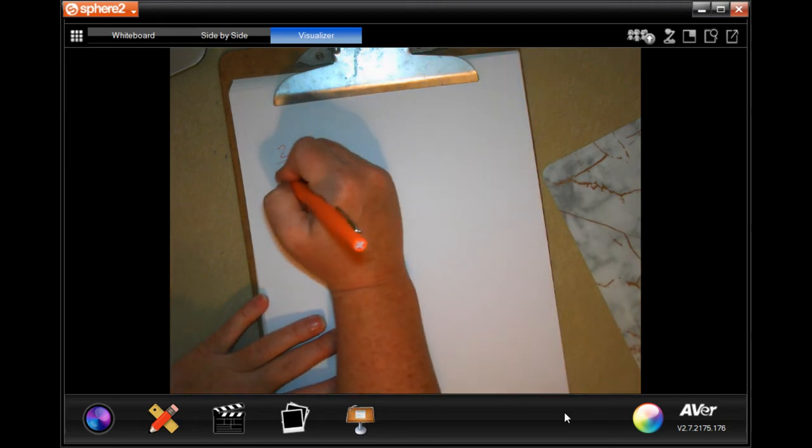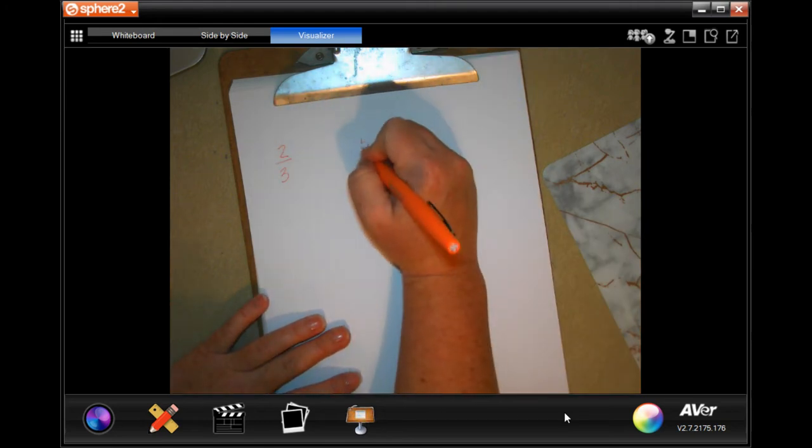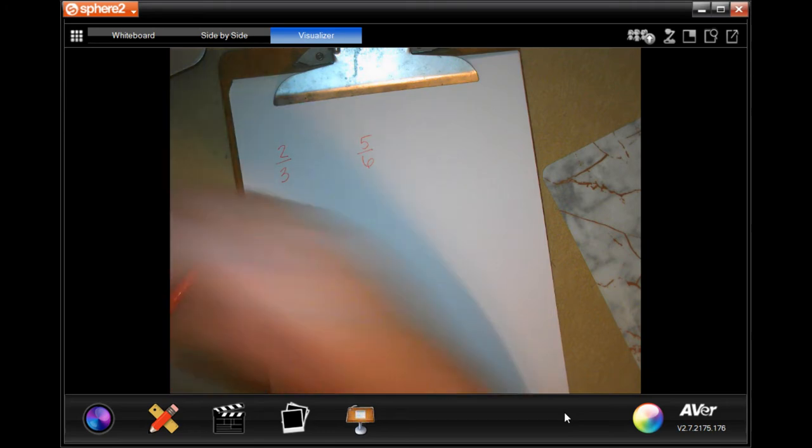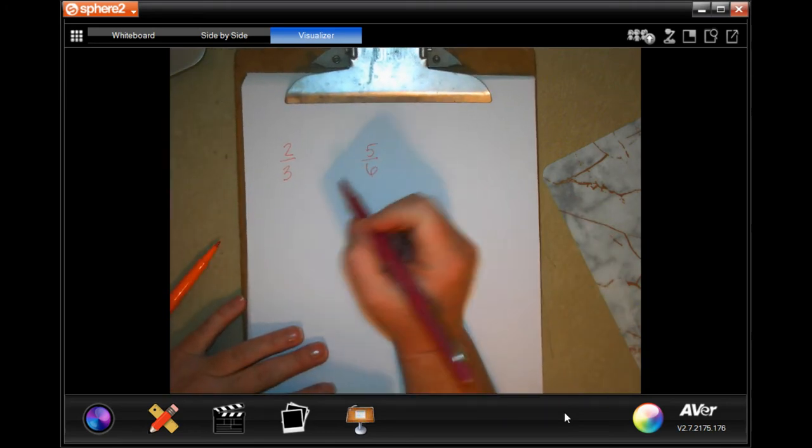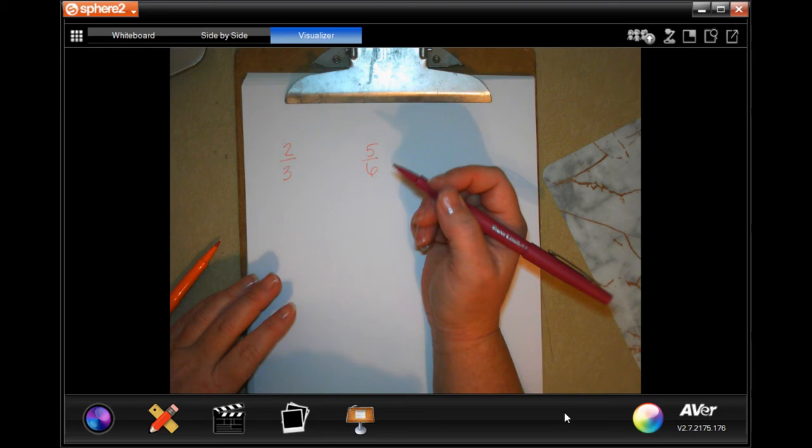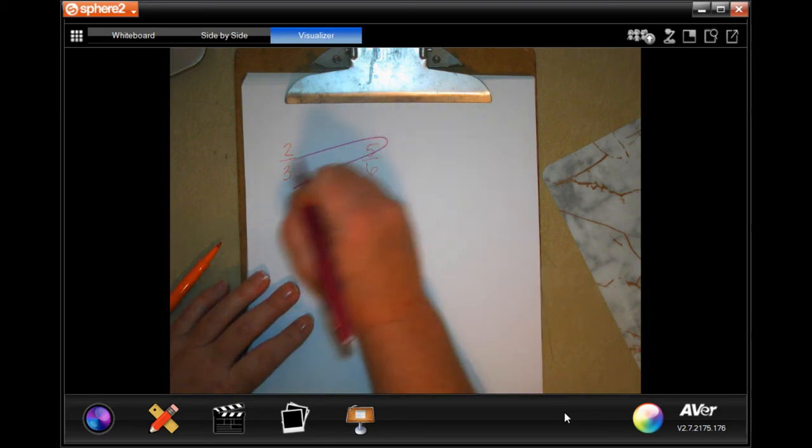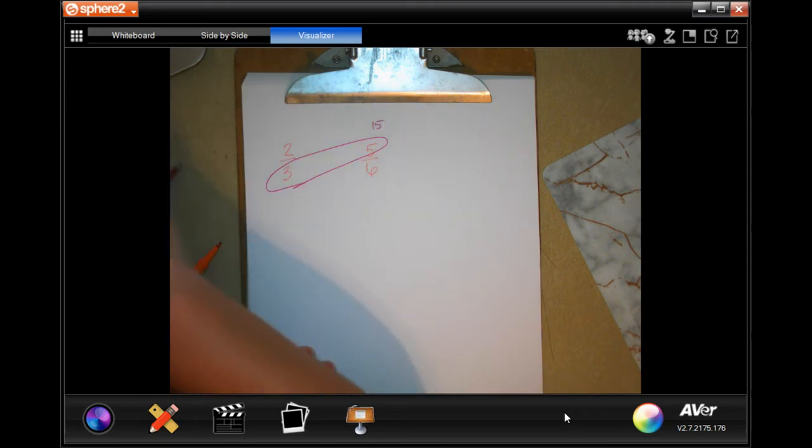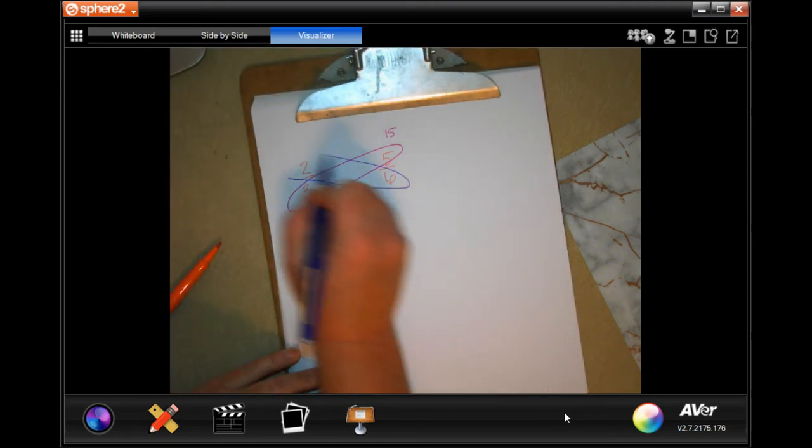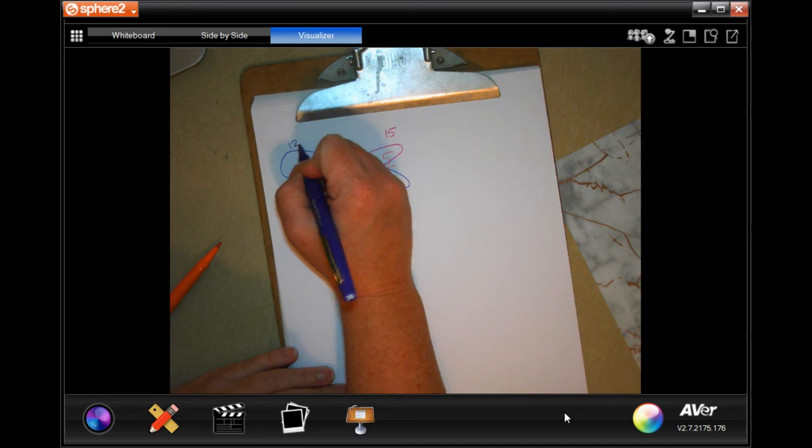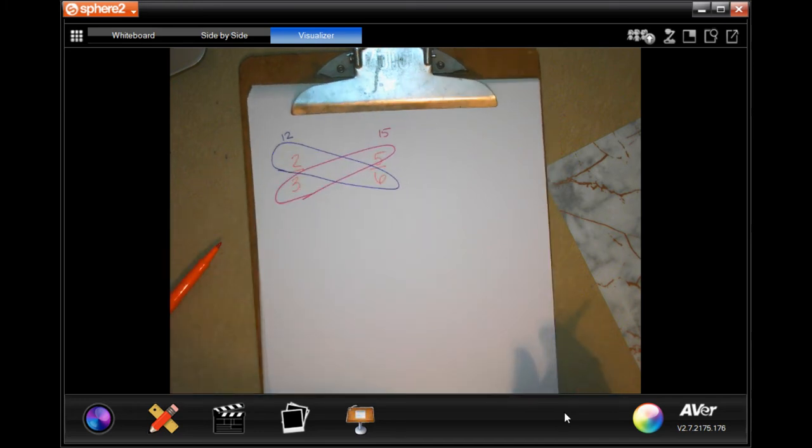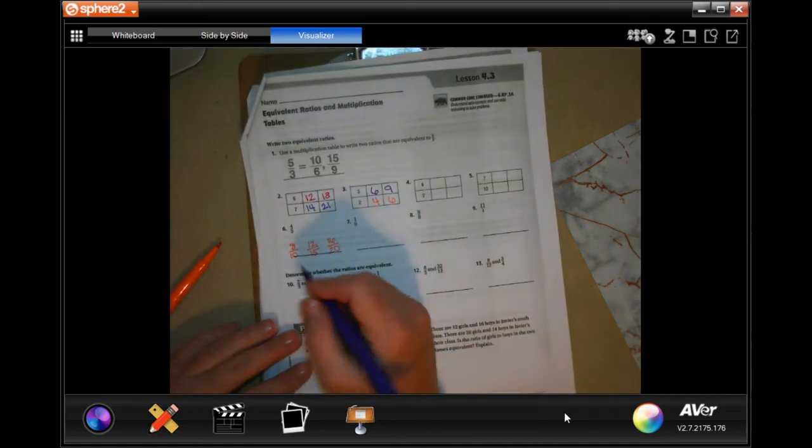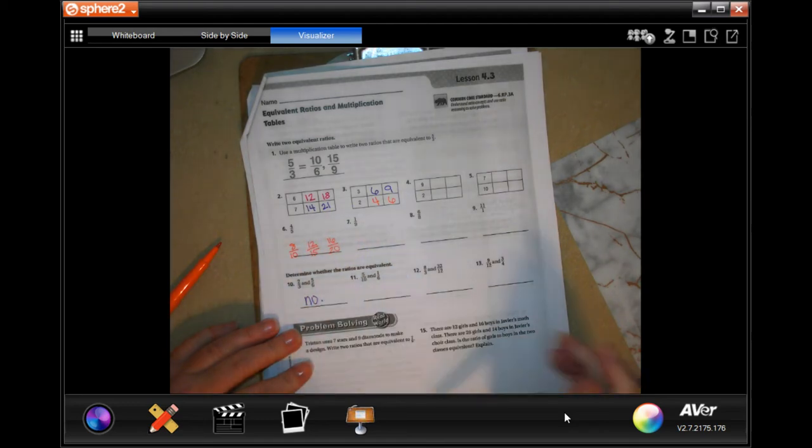2 thirds and 5 sixths. So how do we tell if one fraction is bigger than the other or if they're equal is to do this. 3 times 5 is 15, and 6 times 2 is 12. Not equal, guys.